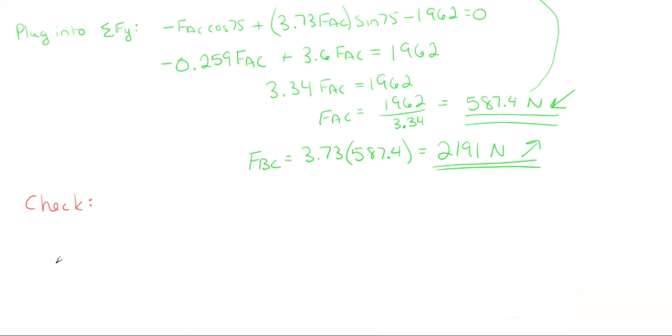So let's go ahead and check that. And it looks like I plugged back into the FY equation here. So we would have a minus FAC, which is minus 587.4 times the cosine of 75, and then plus FBC, which is 2191 times the sine of 75, and then minus 1962. And well, we get 2.3, not exactly zero. So does that mean we've done something wrong here? Not necessarily. If we look at 2.3, the value of 2.3 versus our answer values...